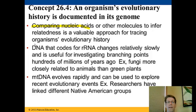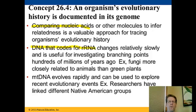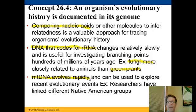It's interesting to note that DNA coding for ribosomal RNA changes very, very slowly — we're talking hundreds of millions of years before we see differences in that genetic code. This is valuable when talking about common ancestors for fungi and green plants, because that divergence took place hundreds of millions of years ago. In contrast, mitochondrial DNA changes much more rapidly, allowing us to analyze more recent events.